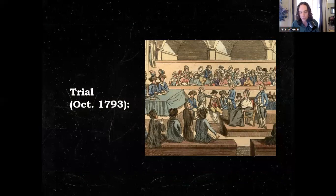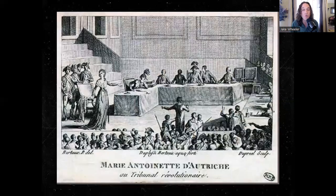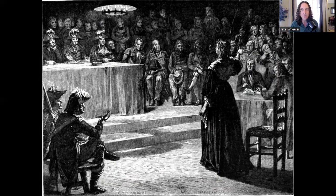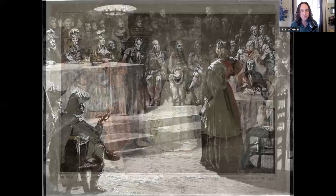This is a show trial. They accuse her of absolutely everything: orchestrating orgies at Versailles, sending millions of French treasury money to Austria, plotting to kill the Duke of Orleans, declaring her son the new king of France, orchestrating massacres. The worst charge: they accused Marie Antoinette of incest with her son. Even the crowd watching the trial turned on the tribunal — you could hear people gasping, women cried. Absolute nonsense, but they want to humiliate her. She is everything radicals saw as bad with the aristocracy. She's found guilty.